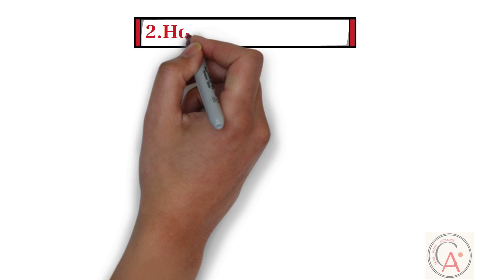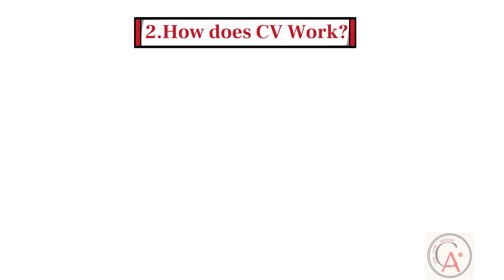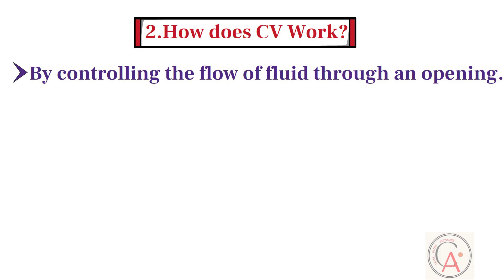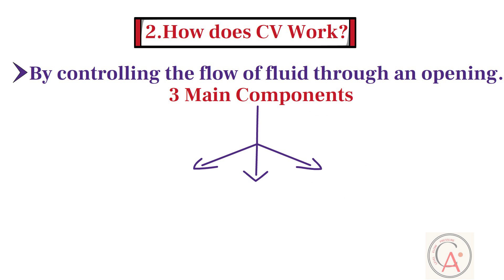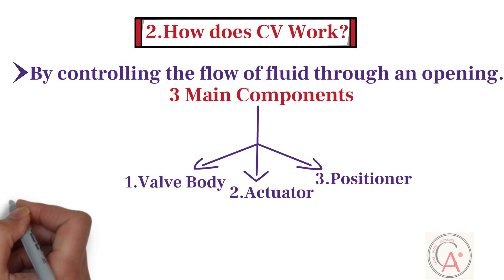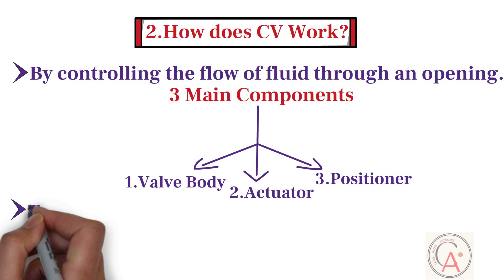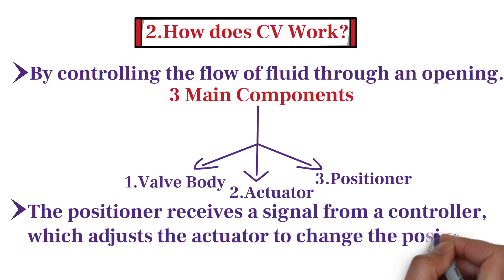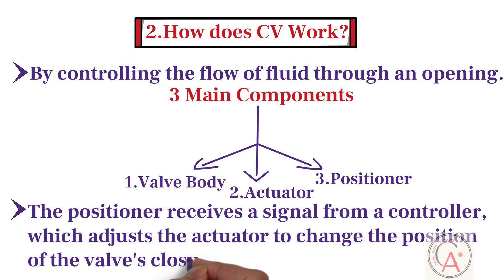Second question: how does a control valve work? A control valve works by controlling the flow of fluid through an orifice or opening. It typically consists of three main components: valve body, actuator, and positioner. The positioner receives a signal from a controller, which adjusts the actuator to change the position of the valve's closure member, thereby controlling the flow of fluid.